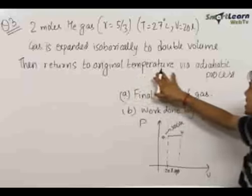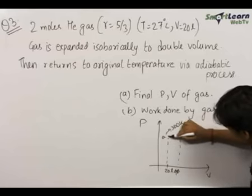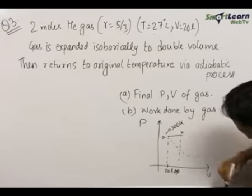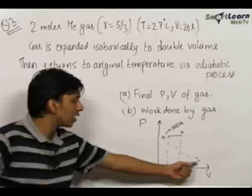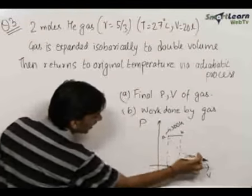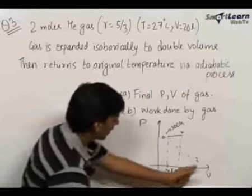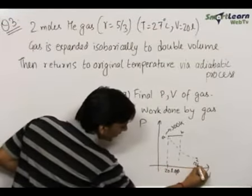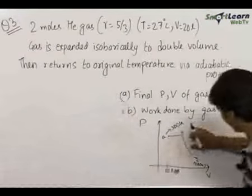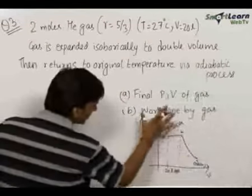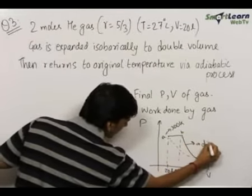The gas returns to its original temperature — original temperature means the temperature at point A — via an adiabatic process. Since it is returning back to the original temperature, let us draw an isotherm here. The point C to which the gas finally comes must lie on this isothermal curve of 300 Kelvin, because in a pressure-volume graph the isotherms are curves like this. The temperature at point C will be 300 Kelvin, and the gas came through an adiabatic process to point C from point B. So the gas went from A to B isobarically, and then from B to C via an adiabatic process.